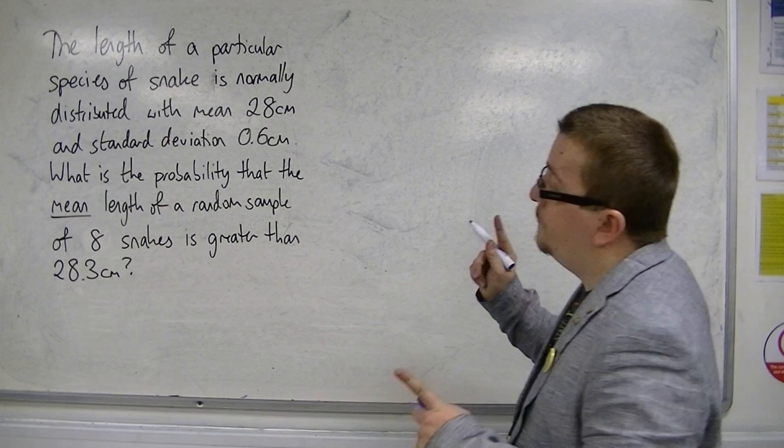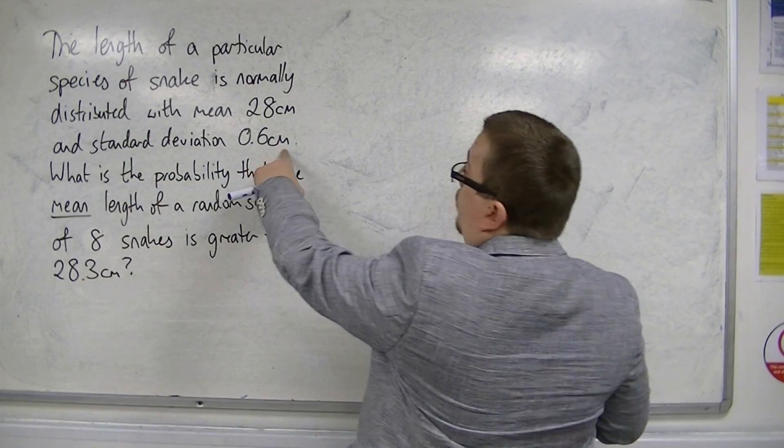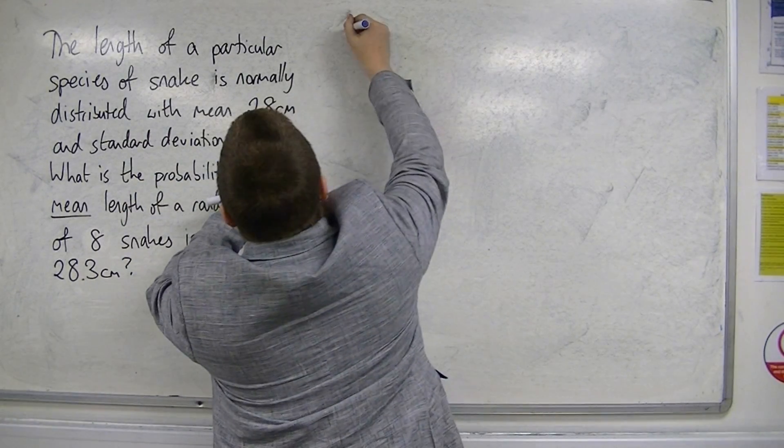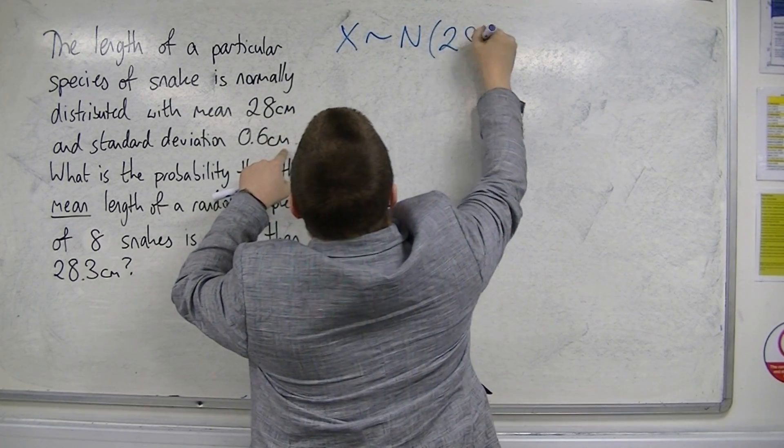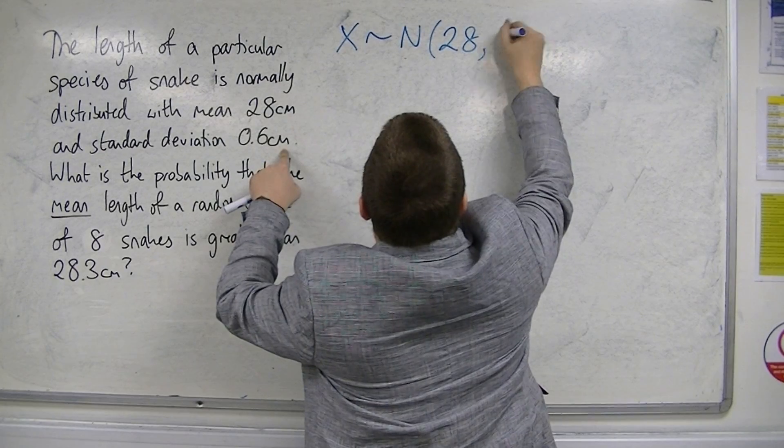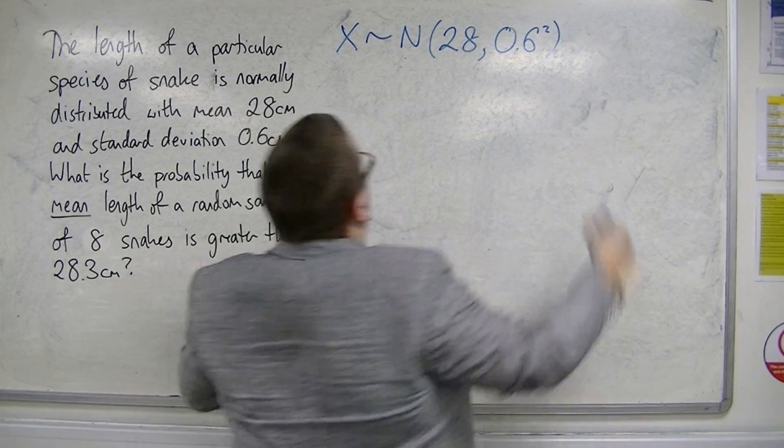First of all, from the first sentence, we can tell that X, the population, is normally distributed with mean 28 and standard deviation 0.6, or variance 0.6 squared.